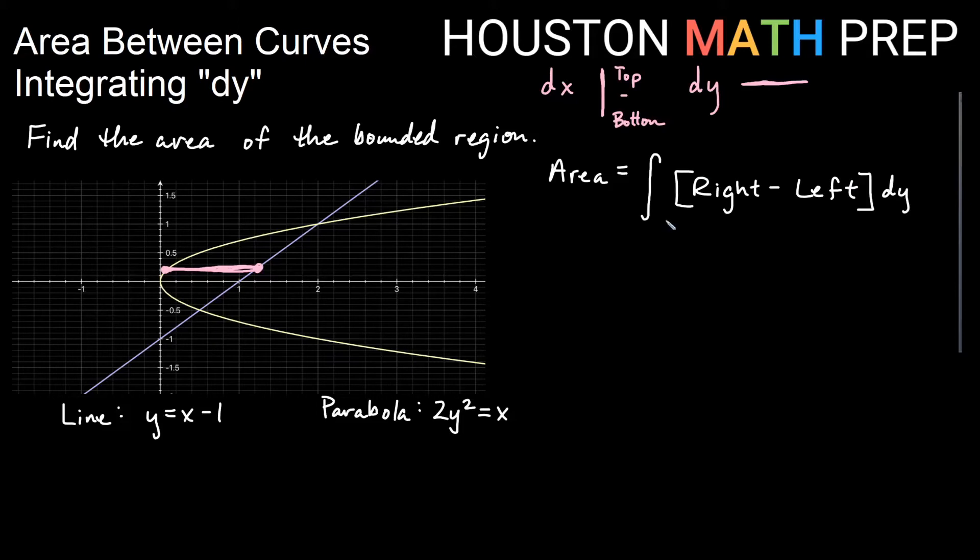So when we do our area between curves and we do it dy with the rectangle running left and right, we will be integrating the right function minus the left function dy. And of course, remember that now a and b, and you'll have some classes where they'll call it c and d instead of a and b, I'm just going to keep calling it a and b. These are going to be y bounds now because you're integrating dy. The other thing that we want to notice that changes, these are no longer going to be functions of x. If we're integrating dy, these need to be formulas in terms of y only.